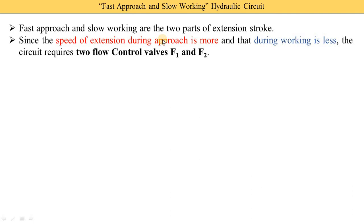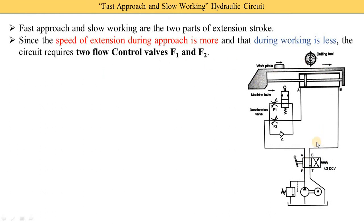One control valve is called F1 and the second is called F2. The speed during extension in the approach phase is high, and during working it is less. This circuit requires two flow control valves, F1 and F2, installed between the directional control valve and the machine component. The machine component includes a cutting tool, a table, and a workpiece on the table, which moves via a double-acting rodless cylinder. A higher speed is required during the fast approach, and slow speed is required once the workpiece and cutting tool come into contact.